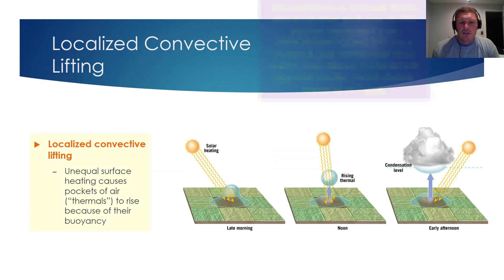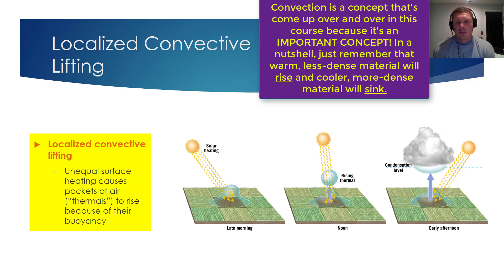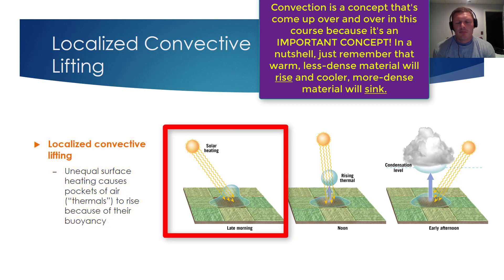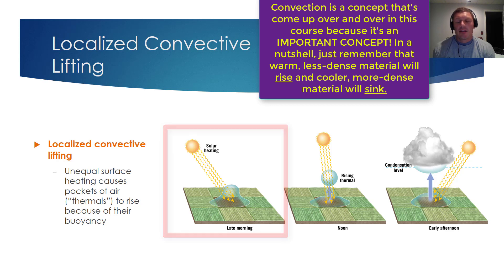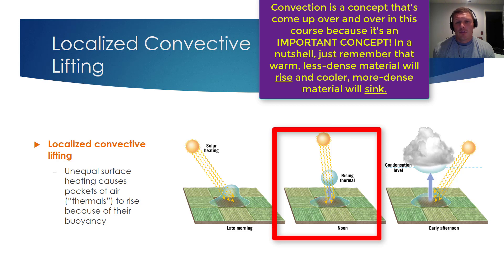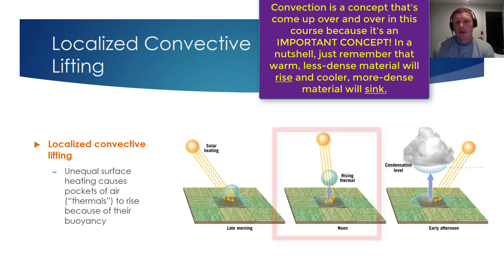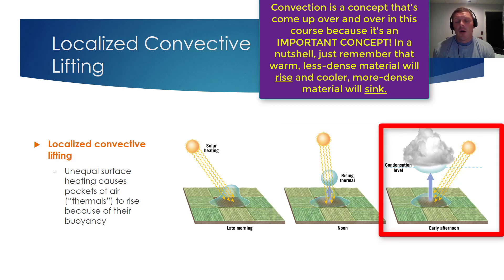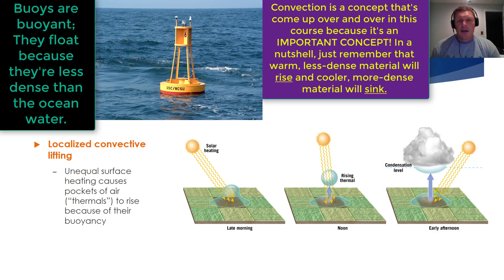The last process for lifting air is localized convective lifting. Localized convective lifting is when unequal surface heating causes pockets of air — which we call thermals — to rise because of their buoyancy. With solar energy beating down on the land all day, a very warm pocket of air can develop at the surface. Warmer air is less dense than cooler air, so those thermals, those very warm pockets of air, can rise vertically, undergo adiabatic cooling, and form clouds. That rising thermal is buoyant compared to the surrounding air, and consequently its tendency is to rise.